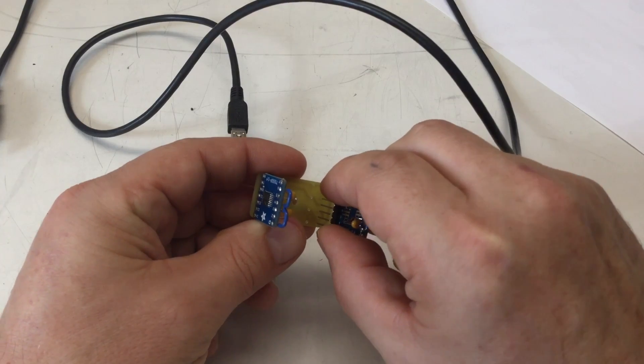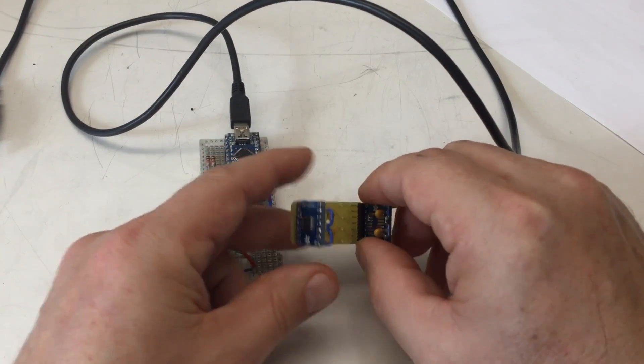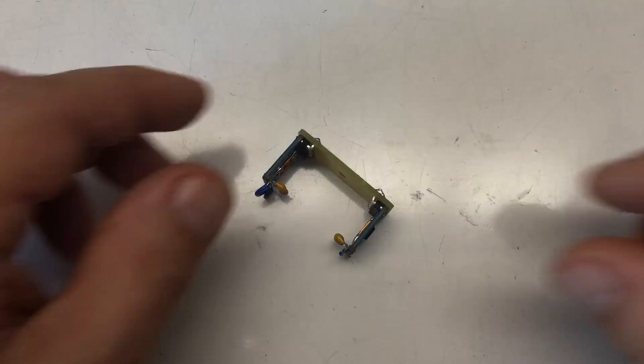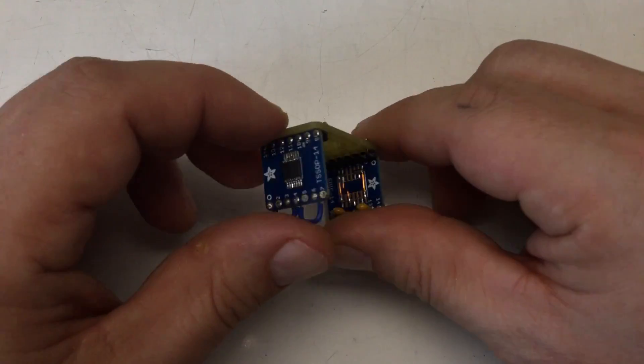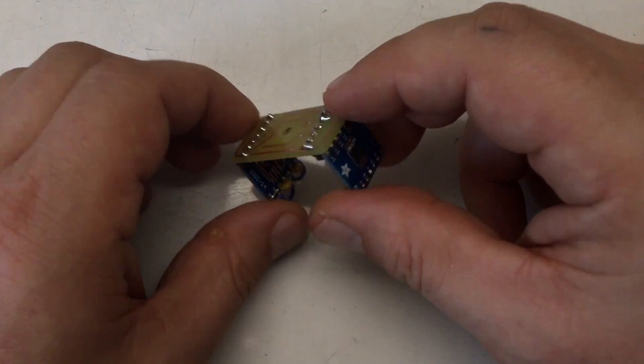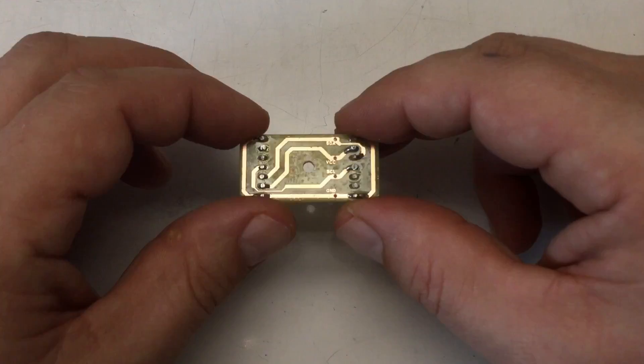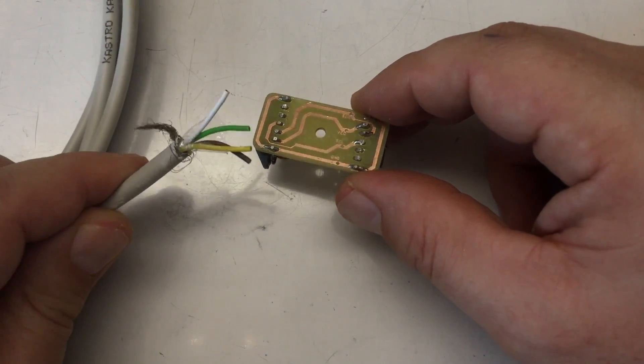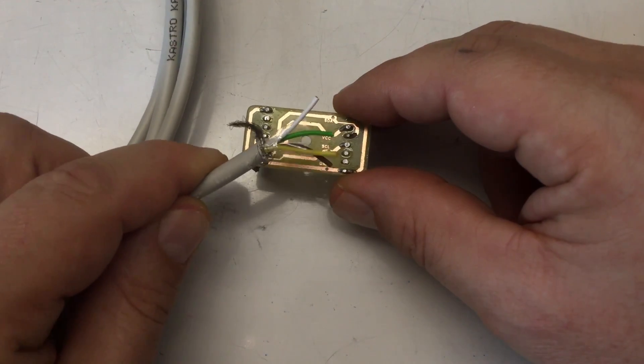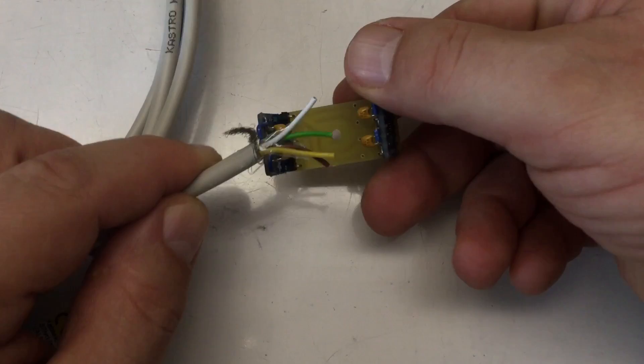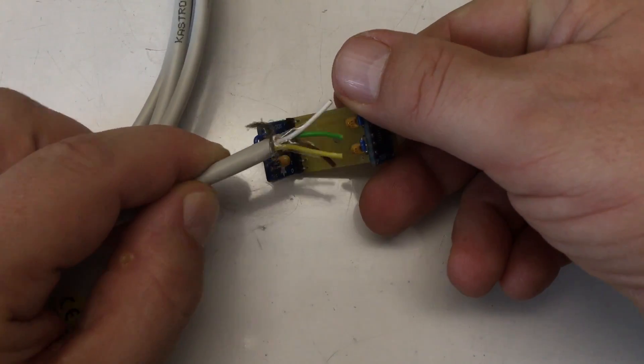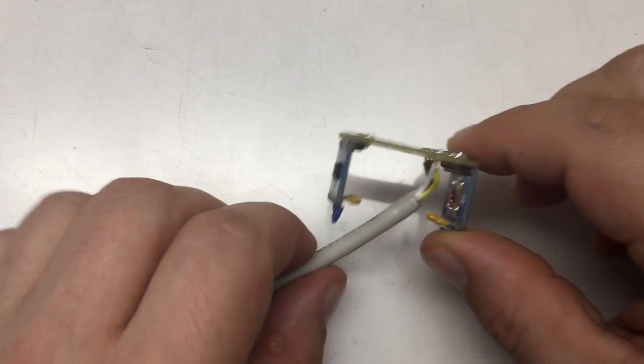Okay, the sensor breakout boards are soldered to our carrier board. Next step, I will have to solder on some cable from that side of course.